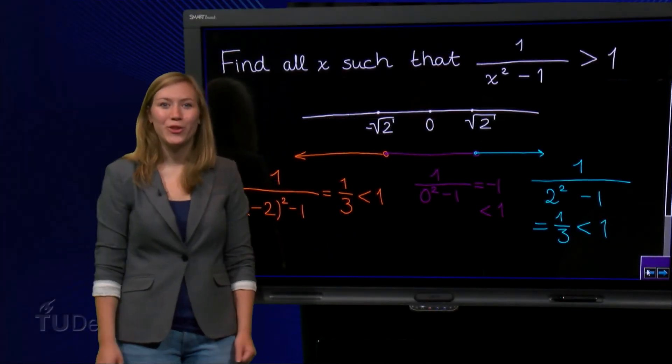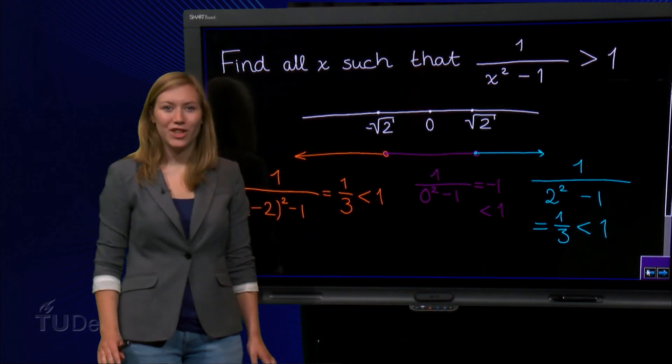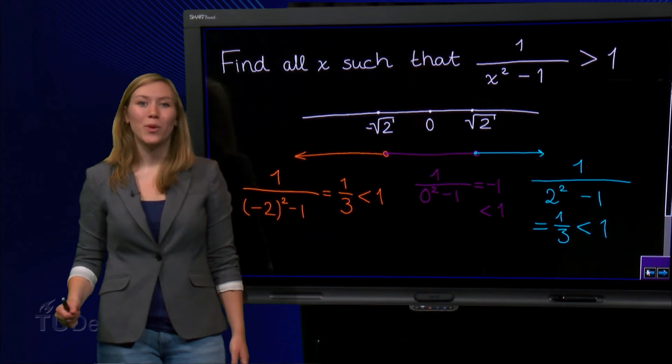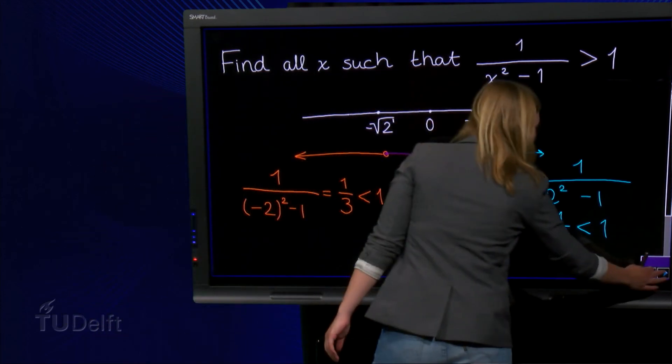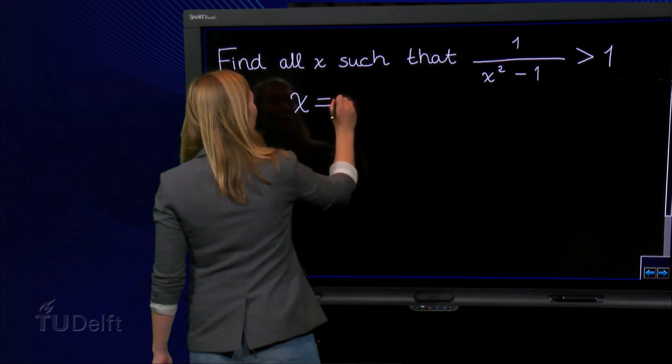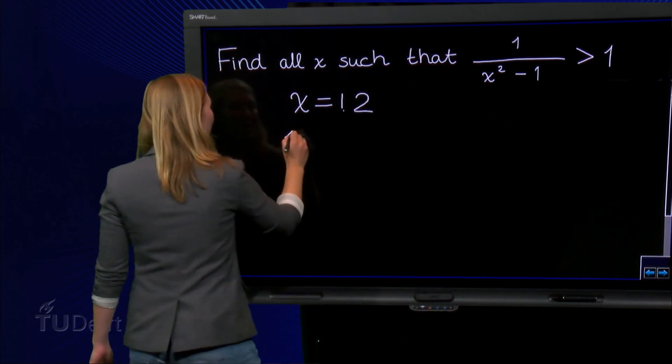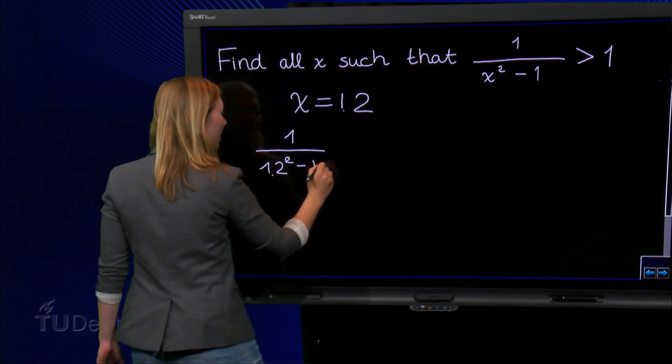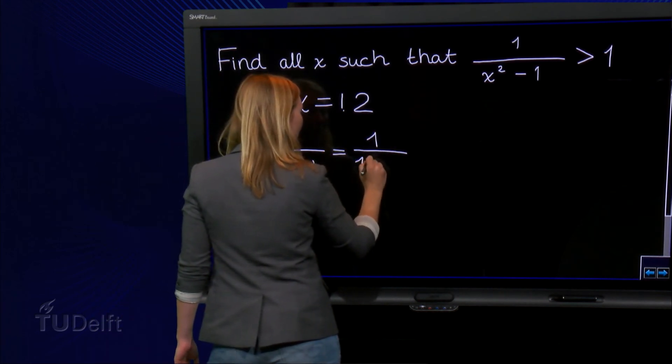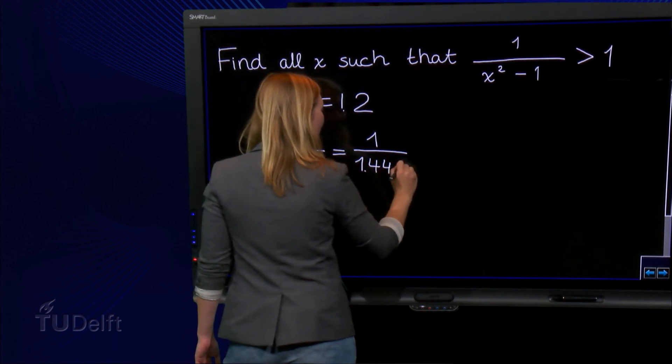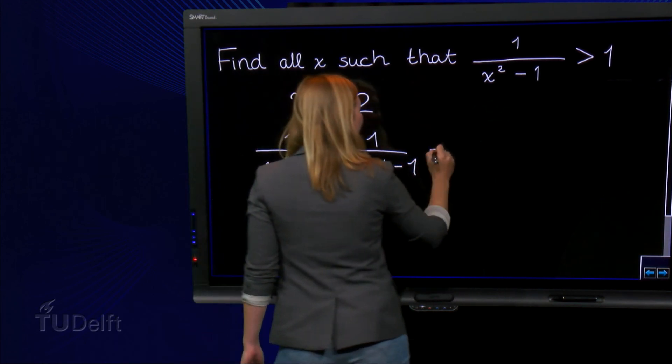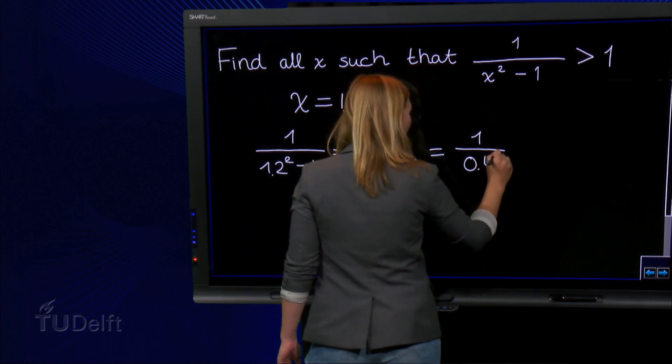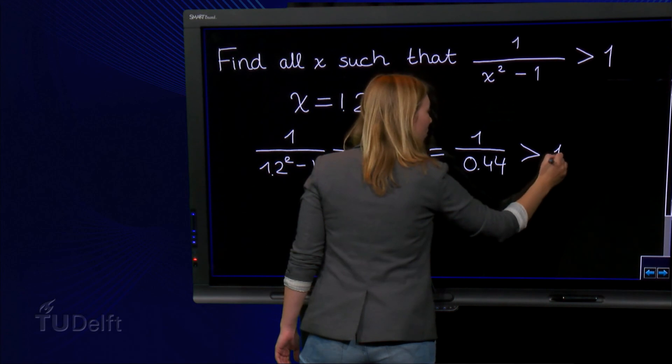We conclude that there are no solutions to this inequality, but that is not true. Let us calculate the left hand side at x equals 1.2. We can see that at x equals 1.2, we get 1 over 1.2 squared minus 1, which is equal to 1 over 1.44 minus 1, which is equal to 1 over 0.44. This is larger than 1.